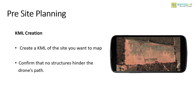The initial step is to create a KML of the site you want to map. Make sure that the boundary of the site is large enough so that you don't miss any area you are planning to map. With the help of Earth browsers such as Google Earth, you can study the area by inspecting it. Make sure to confirm there are no structures such as chimneys, tall trees, buildings or any other construction that could hinder the path of the drone.